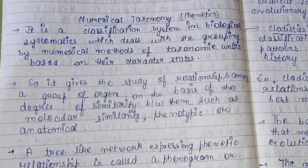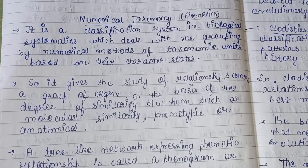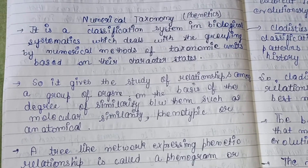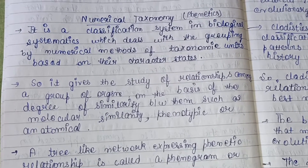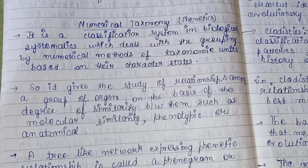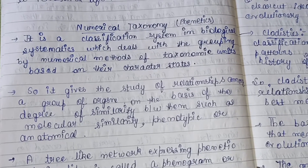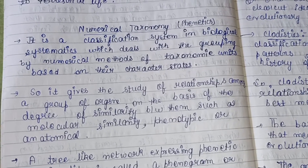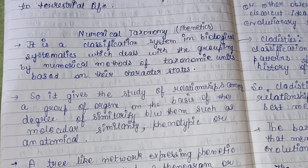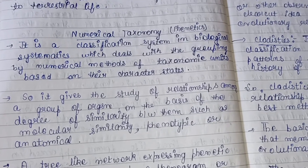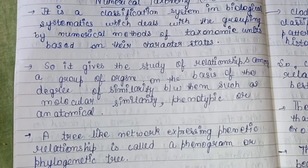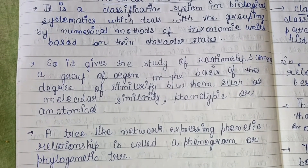Numerical taxonomy gives the study of relationships among a group of organisms on the basis of the degree of similarity between them, such as molecular similarity. Molecular similarity means the similarity of chemical elements, molecules, or chemical compounds with respect to either structural or functional qualities — that is, the effect that the chemical compound has on reaction partners in inorganic or biological settings.